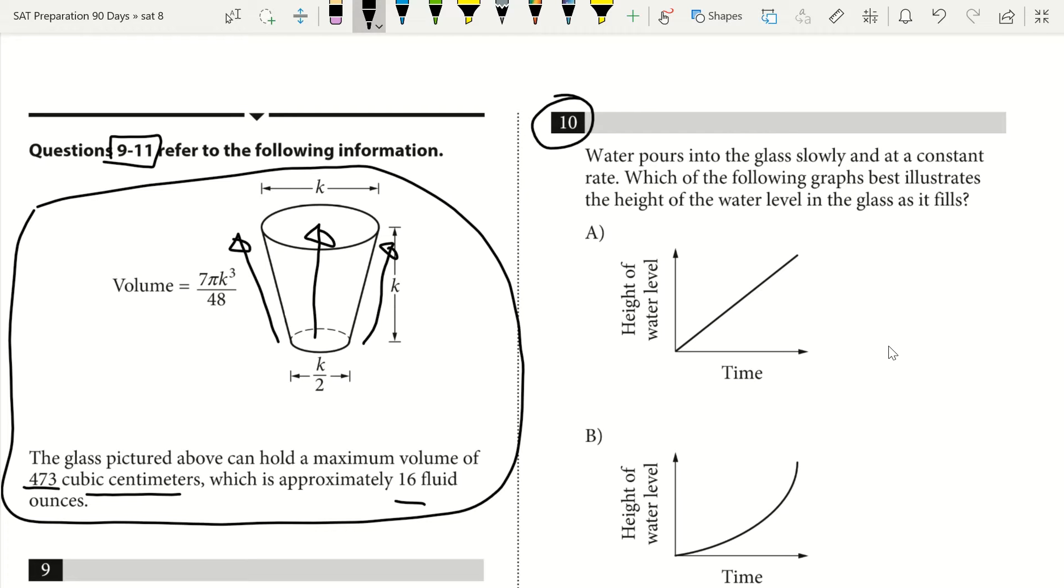Question 10 says water pours into the glass slowly and at a constant rate. That means that our volume, the volume of the water we're putting in, let's say it's five milliliters per second. That's constant.